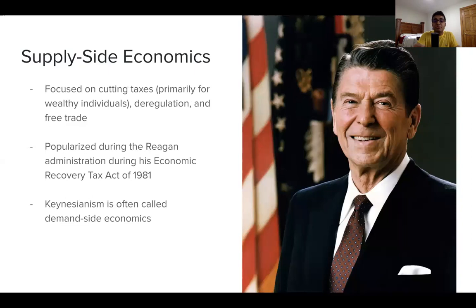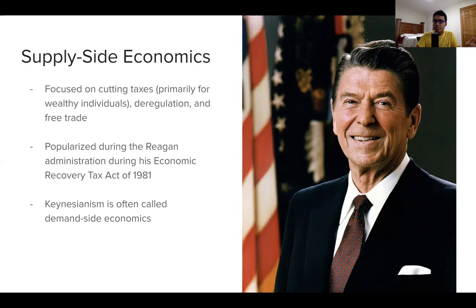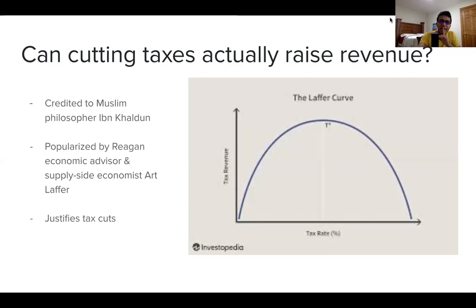On the other side, if Keynesianism is demand-side economics, then supply-side economics — championed by Reagan — focuses on cutting taxes primarily for wealthy individuals, deregulation, and free trade, not just during crises but any period. This was popularized during Reagan's Economic Recovery Tax Act of 1981. Under Reagan's view, if we decrease regulations and cut taxes, businesses will invest those extra savings into the economy and into worker wages.